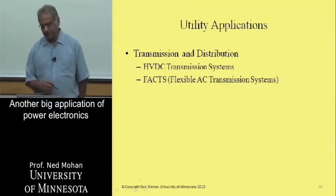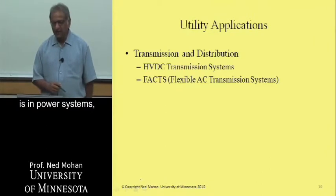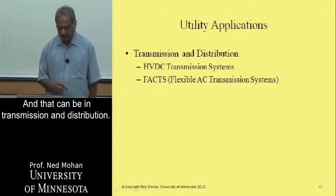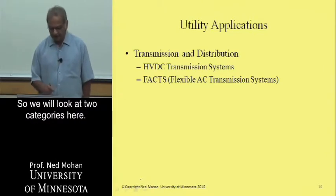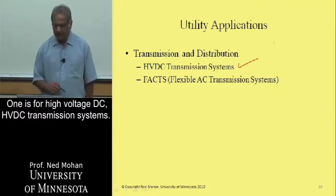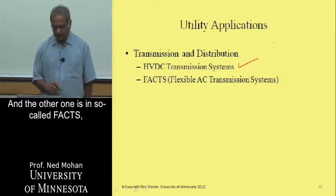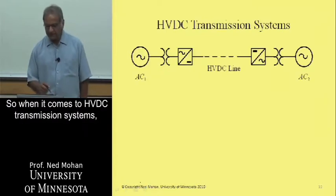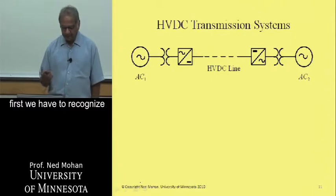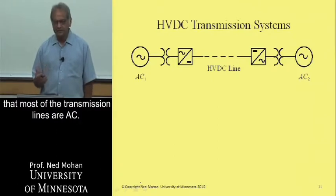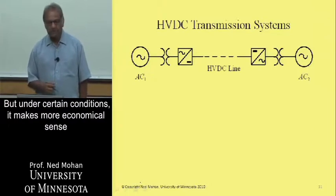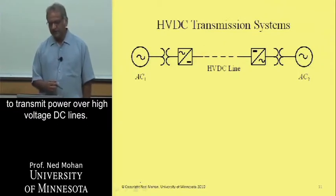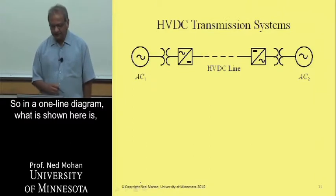Another big application of power electronics is in power systems — very high power applications in utilities — in transmission and distribution. We will look at two categories: one is for high voltage DC, HVDC transmission systems, and the other is the so-called FACTS, flexible AC transmission systems. When it comes to HVDC transmission systems, we first have to recognize that most transmission lines are AC, but under certain conditions it makes more economic sense to transmit power over high voltage DC lines. In a one-line diagram, let's say we have AC system one and AC system two.